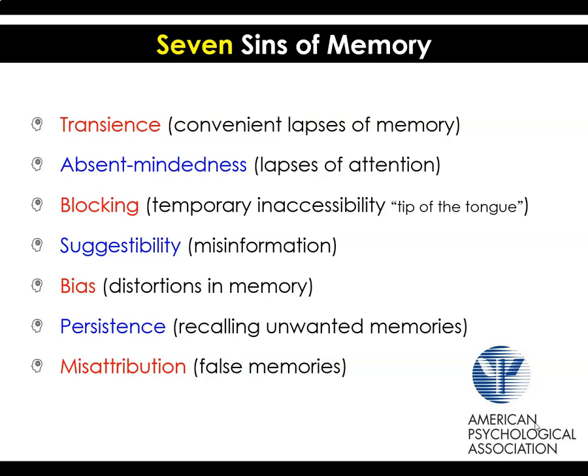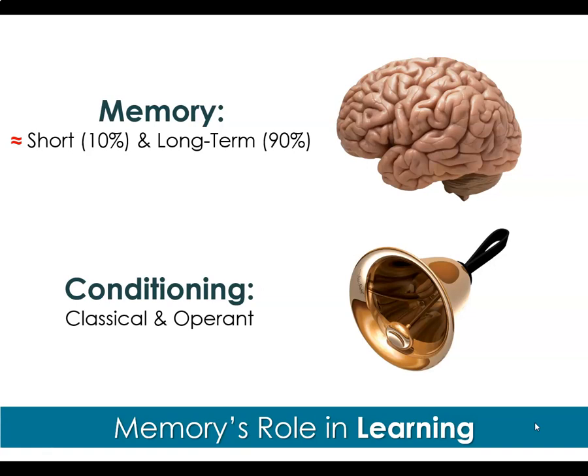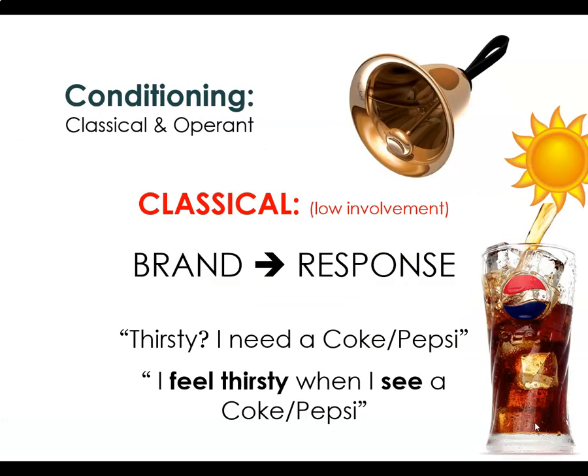Another outcome especially useful for future marketers comes from our sister discipline of psychology — specifically the American Psychological Association, who helped us understand the seven sins of memory, because we as people are fallible and our memory is not perfect. Memory is comprised of short-term memory in the prefrontal cortex and long-term memory, and can be a function of either classical conditioning or operant conditioning. There are two forms of conditioned learning, either classical or operant, and sometimes they act in concert together.